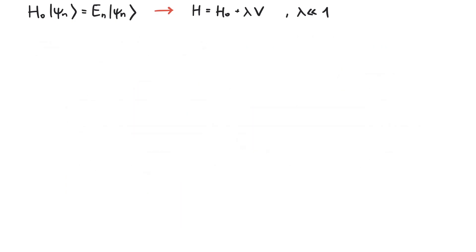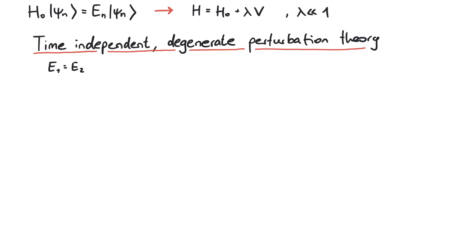Now let's look at what happens when we have degeneracy in our system. This means that two eigenstates, psi1 and psi2, have the same energy. Let's call it epsilon.